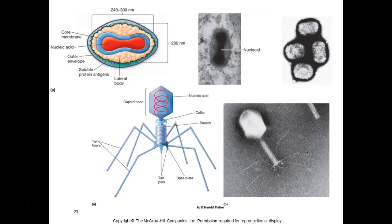The phage compresses and injects its nucleic acid into the bacteria. Bacteria have a peptidoglycan cell wall that's really hard to breach. Unlike animal viruses where the whole virus enters our cells, with bacteria just the nucleic acid and any needed enzymes get injected in — it's too hard to get the whole virus in. That's why it has this spaceship-looking structure.